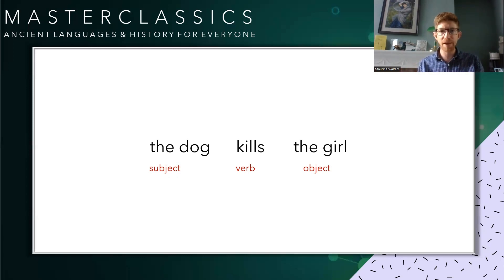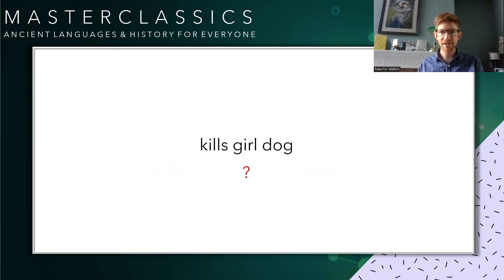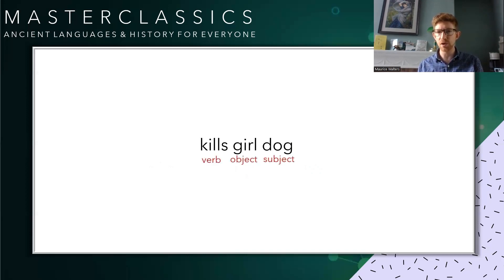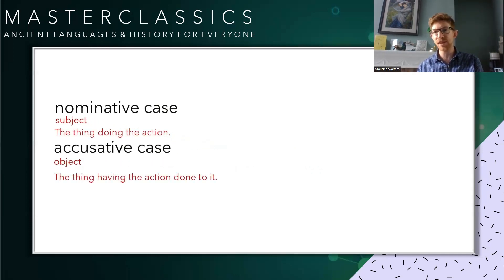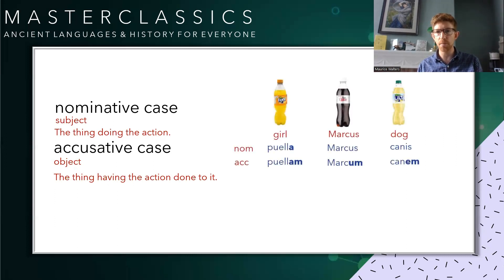The crazy thing is, in Latin you can move around the sentence structure as much as you like — there is no formal set word order. Which means you can't tell what a noun is doing in a sentence just based on where it comes. If we encountered 'kills girl dog' in English, we'd have no idea what was going on. Latin has a really interesting workaround: it gives its nouns two cases — the nominative for the subject, and the accusative for the object.